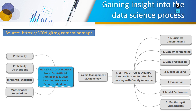Now we will start the important part related with the data science process. I have taken the reference of the site 360digit.com, where they have provided a mind map describing the different processes available for a data science project. One important point: these processes are very complex. To complete one data science project in industry, we require a minimum of six to eight months.